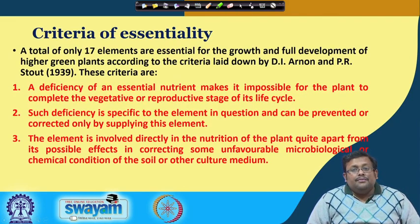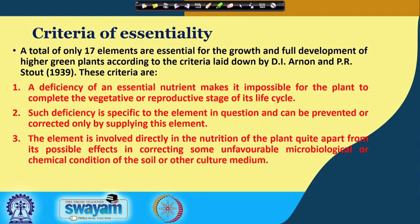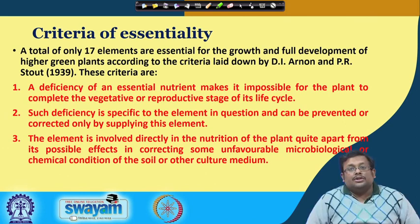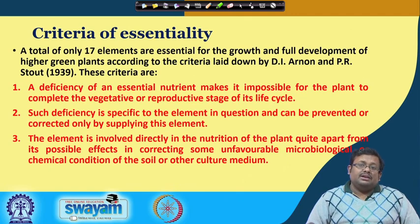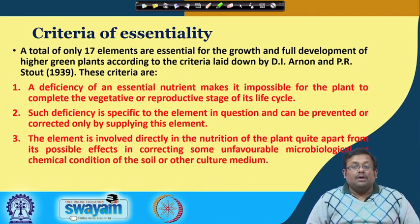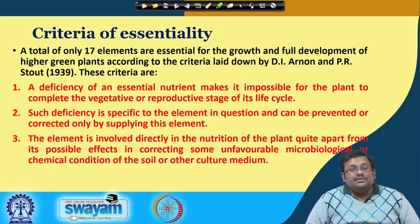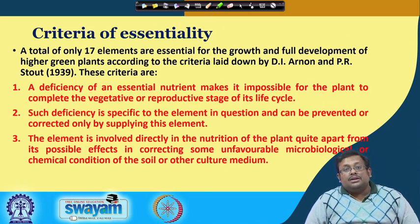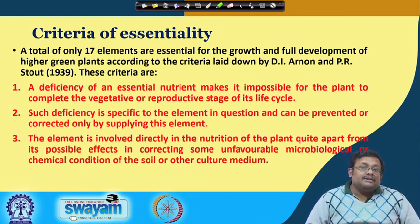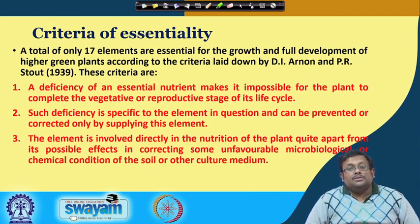Let us see what are the criteria based on which we can term a particular element as an essential plant nutrient. The total of 17 elements are essential for growth and development of higher green plants. These criteria of essentiality were given by two scientists, Arnon and Stout, in the year 1939.